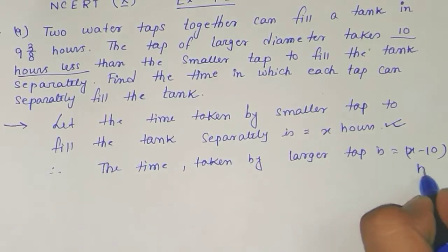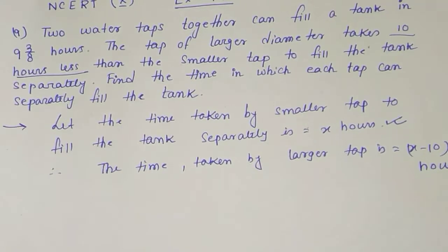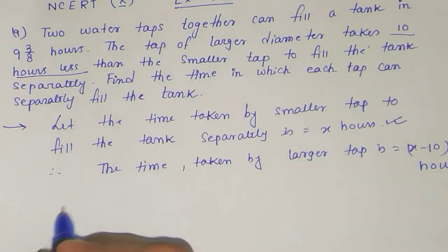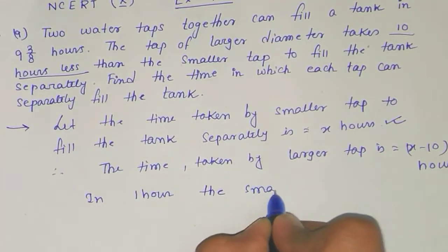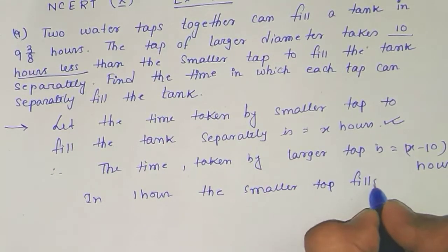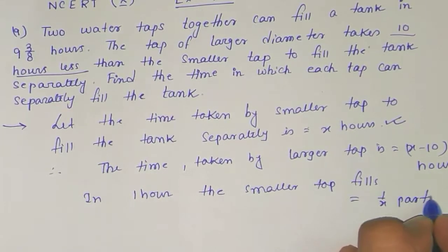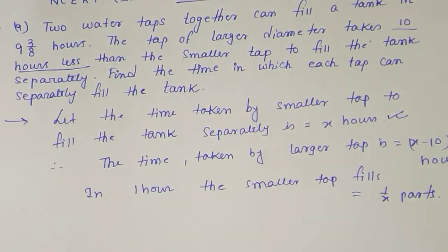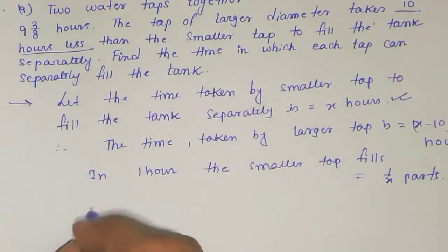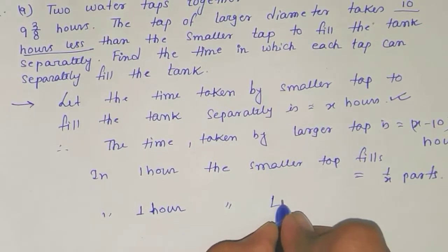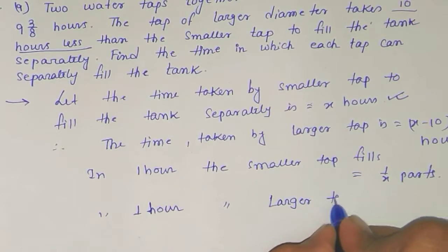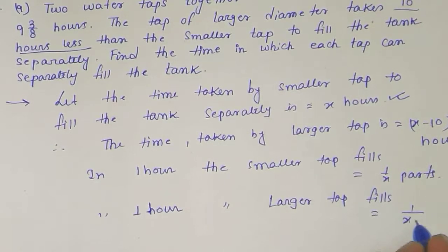In x hours and x minus 10 hours respectively, the first and second tap fill the tank completely when working separately, meaning each fills one full part of the tank. So in one hour, the smaller tap fills 1/x part of the tank. By the same logic, the larger tap fills 1/(x minus 10) part of the tank in one hour.